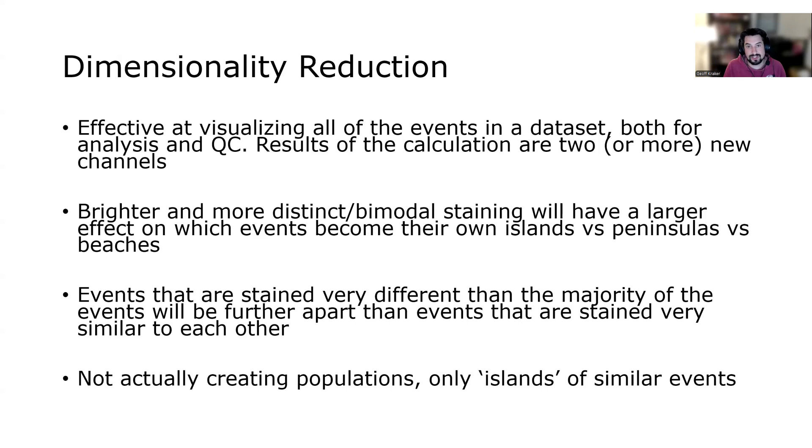Events that are stained very differently than the majority of the events will be very far away in your dimensionality reduction parameters. Events that are very similar, except for one or two markers, will be right next to your other cells. And so there's no lower limit on the number of events that you can visualize, just on the difference of those events from the rest of the events in the particular calculation. And just a quick note here, dimensionality reduction is not creating new populations or clusters, which is why I'm using this island terminology, this cartography terminology, because it's not making any new populations.